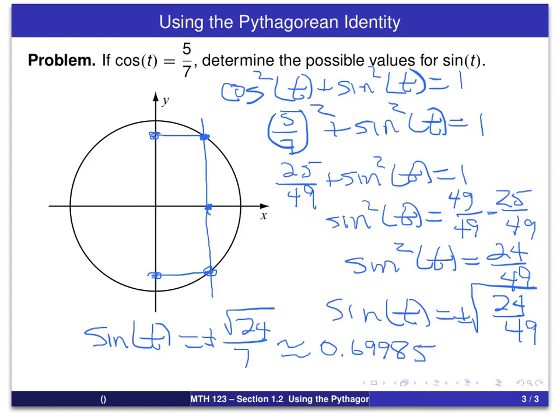And there you have a worked out example of a problem that uses the Pythagorean identity. So long.